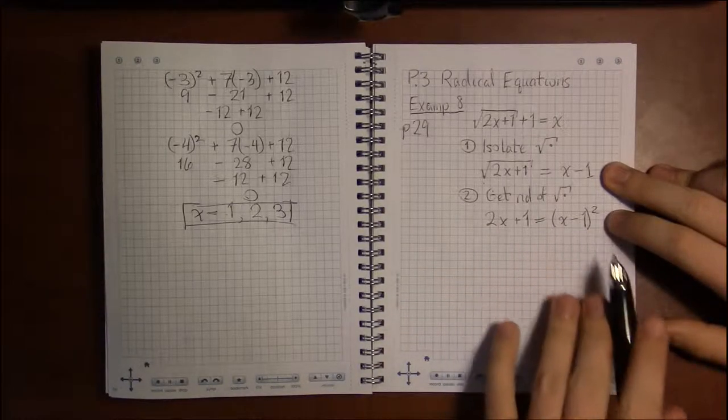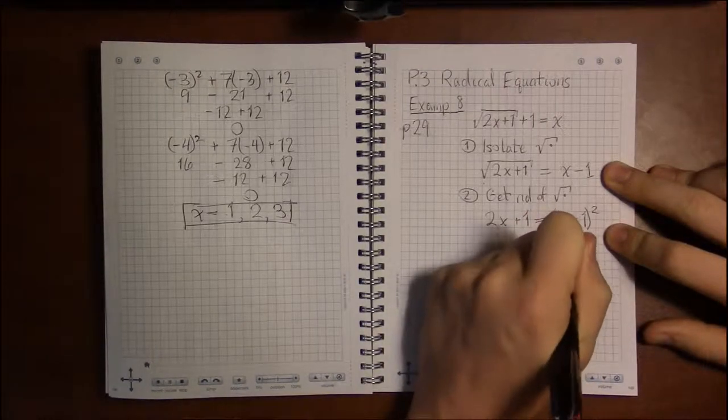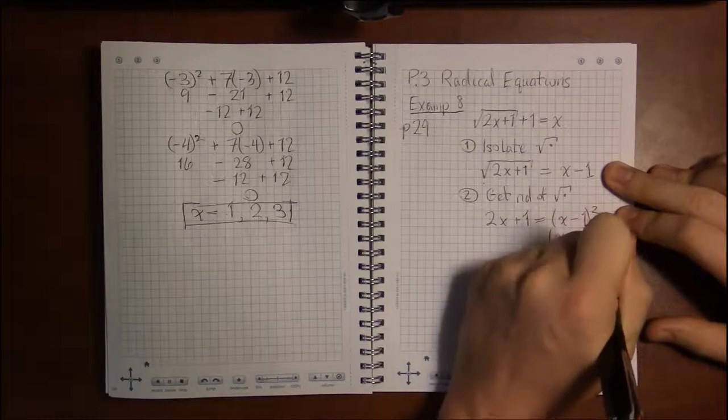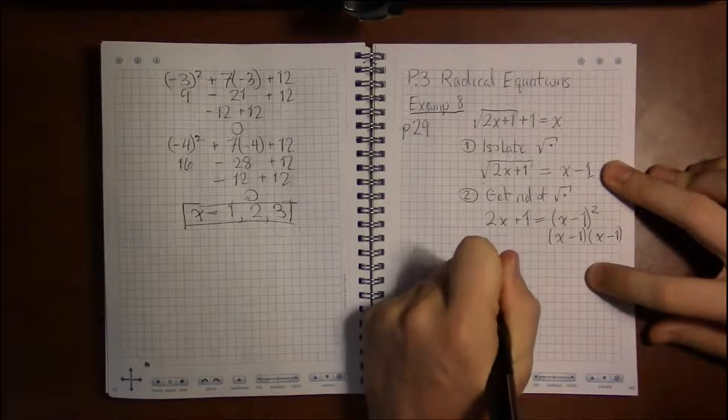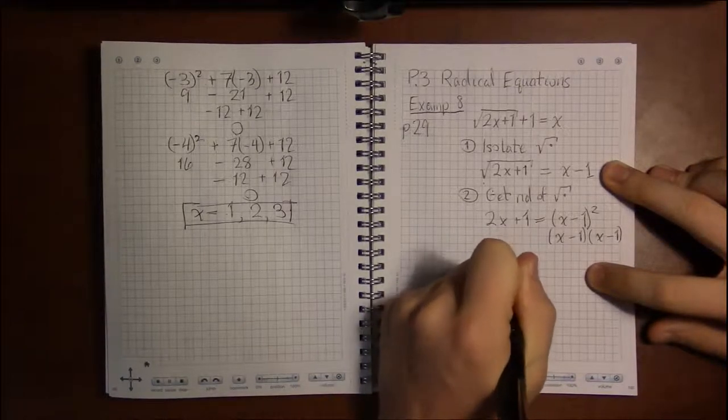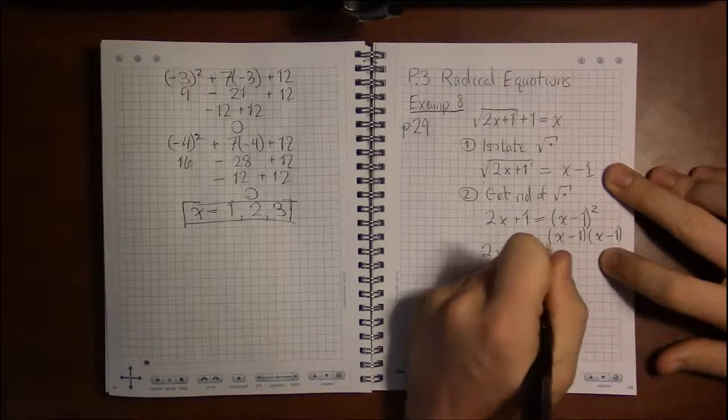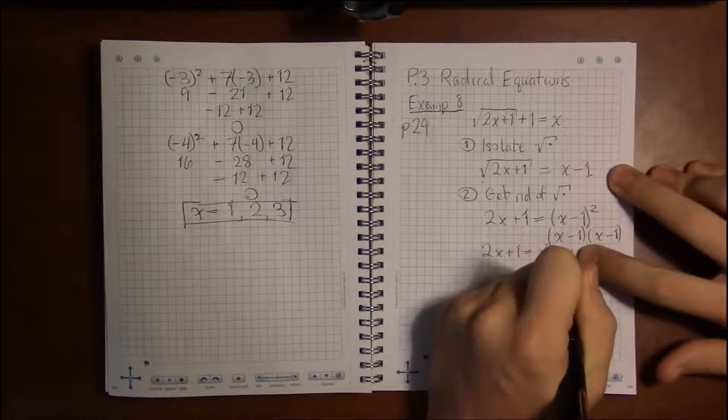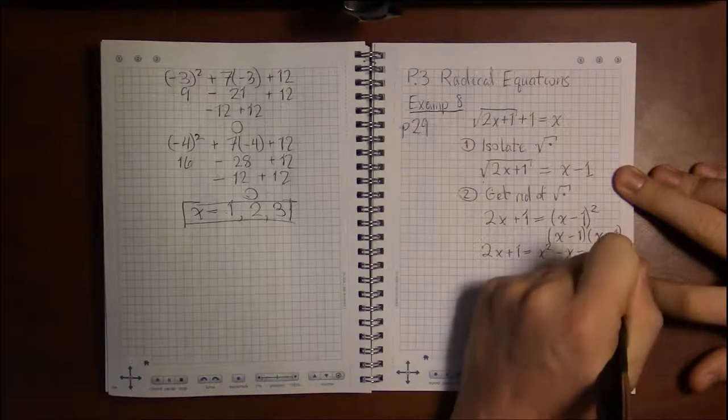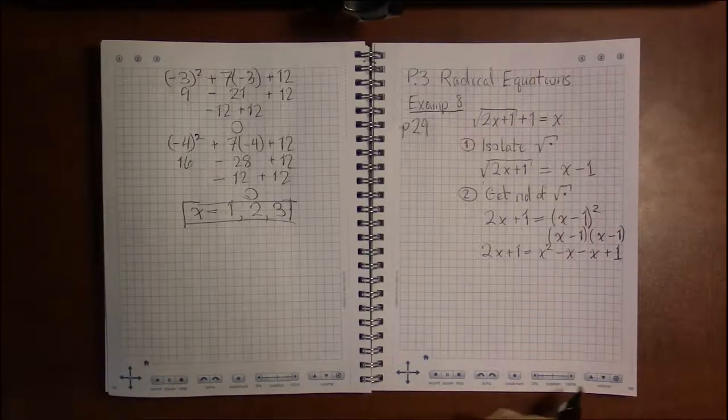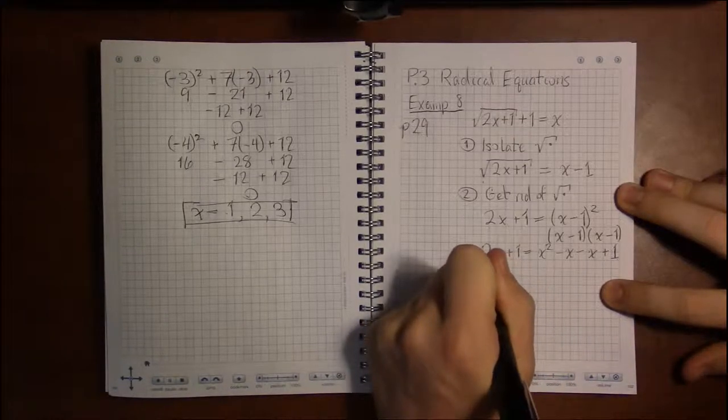So we just have 2x plus 1 equals (x minus 1) squared. Now, squaring is just multiplying x minus 1 by itself. So we can FOIL or distribute this. And that gets us x squared minus x minus x plus 1. If we simplify, minus x and minus x becomes minus 2x.